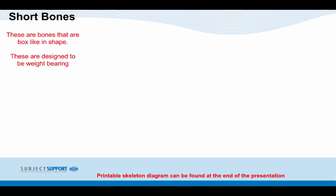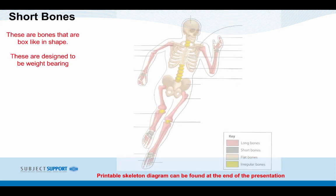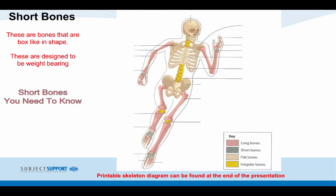Short bones are bones that are box-like in shape and are designed to be weight-bearing. Short bones you need to know: carpals and tarsals.